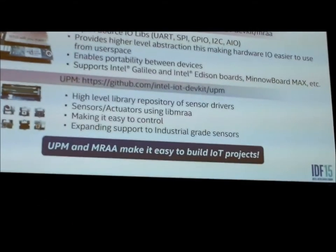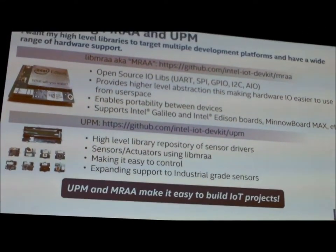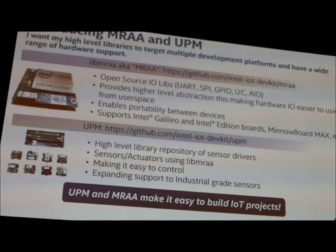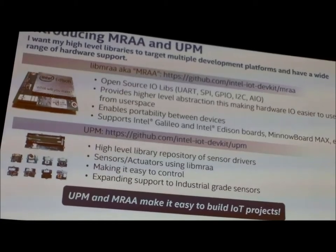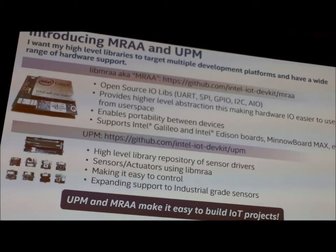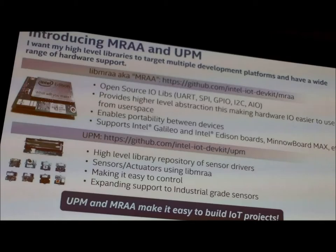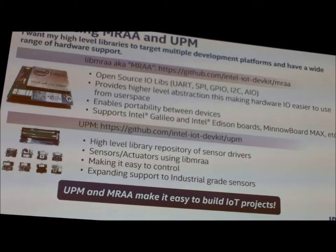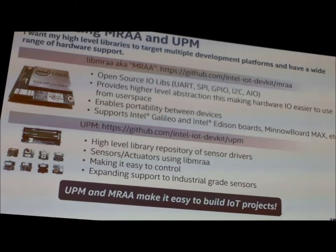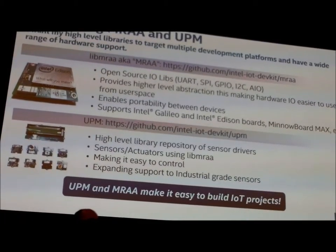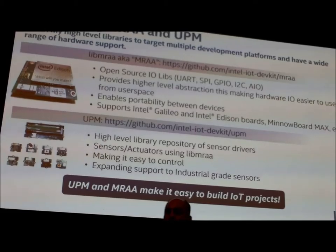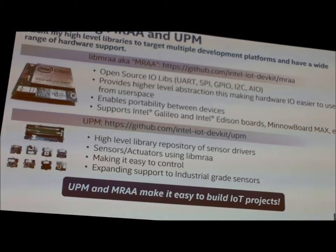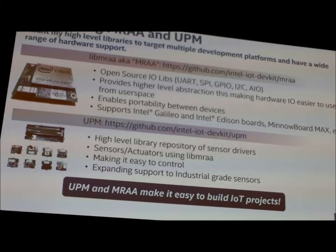We've built a set of middleware libraries. One is called MRAA — an IO library that gives you abstraction for UART, SPI, GPIO, and many other capabilities. It supports a whole range of products: Edison, MinnowBoard Max, and Galileo. The community loved this library so much that they ported it to Raspberry Pi and back again. These libraries allow that type of portability between hardware platforms.